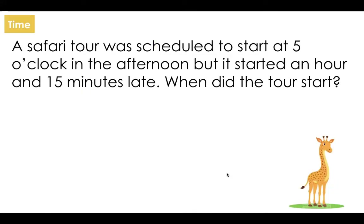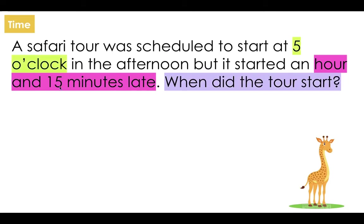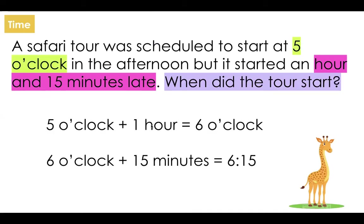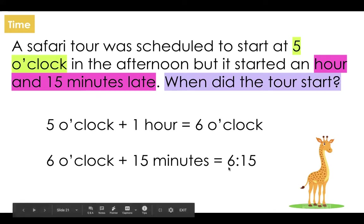Time. A safari tour was scheduled to start at five o'clock in the afternoon, but it started an hour and 15 minutes late. Pause the video and see if you can figure it out. The tour was supposed to start at five o'clock but started an hour and 15 minutes late, so I need to figure out when the tour actually started. I need to add one hour to five o'clock, which gets us to six o'clock, and then add 15 more minutes. So 6:15 was when the tour started.